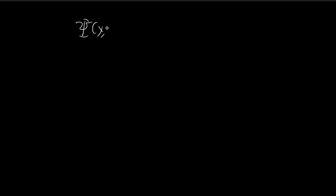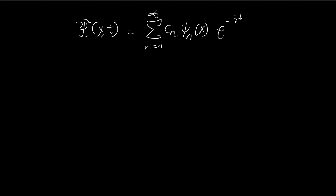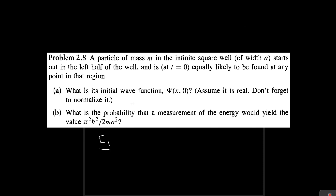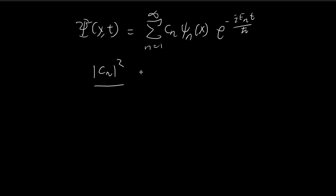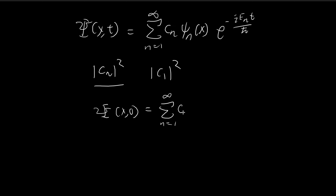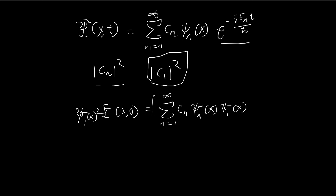Recall that for a wave function, the entire expression looks something like this — you have your time component. And then the probability that you will arrive at the nth energy state is equal to |cn|², as proven in the book. In our case, we want to find the probability of getting the first energy state after a measurement, so we're trying to find |c1|². We're going to use Fourier's trick to deduce what c1 should be. Taking t equal to 0, this exponential term is just equal to 1. Then we multiply both sides by the first stationary state and integrate both sides.